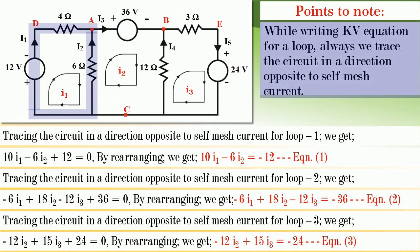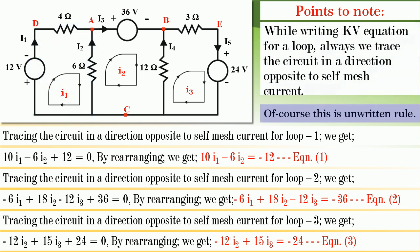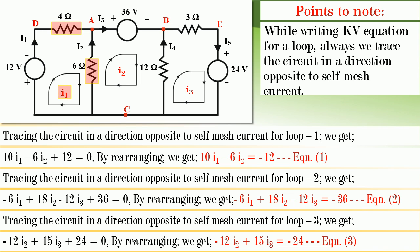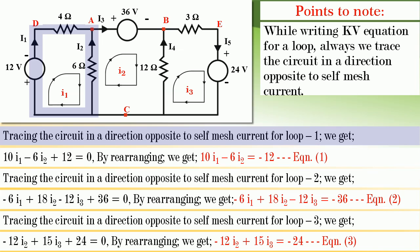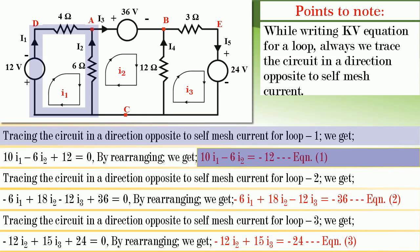While writing the Kirchhoff's voltage equation for a loop, we always trace the circuit in a direction opposite to the self-mesh current. This is an unwritten rule. If we do so, the drop due to the self-mesh current i1 in all passive elements of that loop will be positive, and the drop due to associated mesh currents in those elements will be negative. This allows us to write the KVL equation mechanically. For loop 1, we get: 10i1 − 6i2 + 12 = 0, which rearranges to 10i1 − 6i2 = −12. Let this be equation 1.